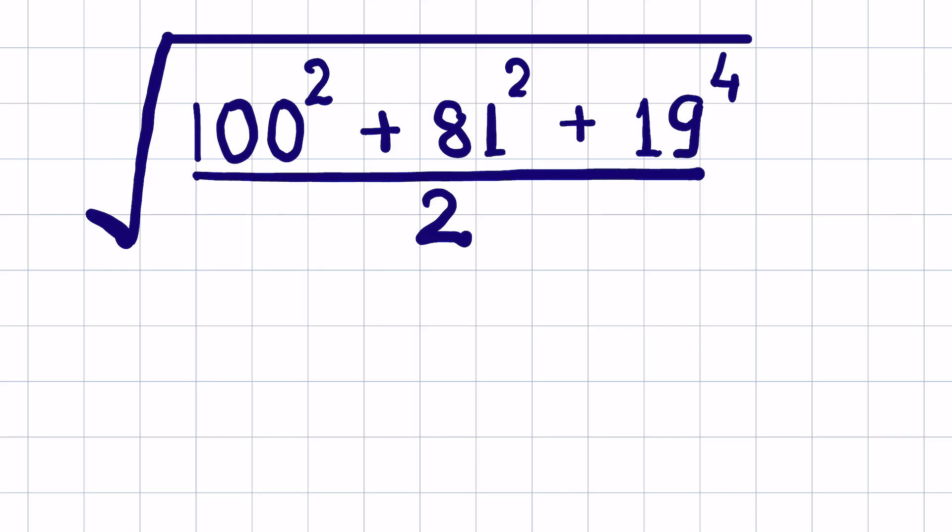Evaluate the square root of (100 squared plus 81 squared plus 19 raised to the power 4) upon 2, without using a calculator. So let's try.